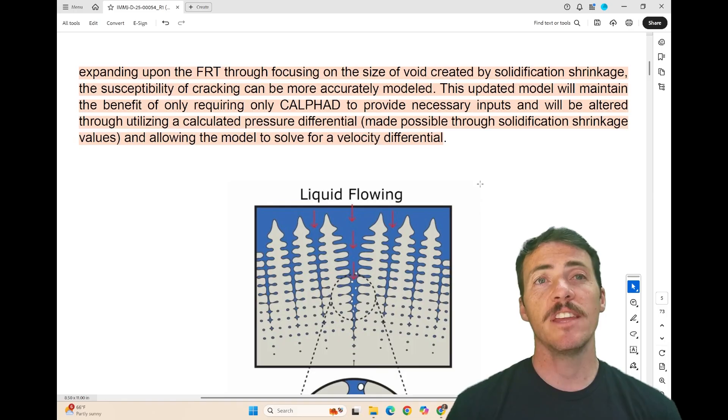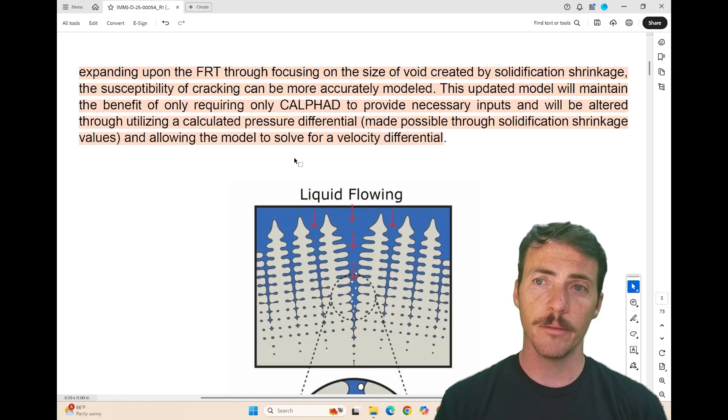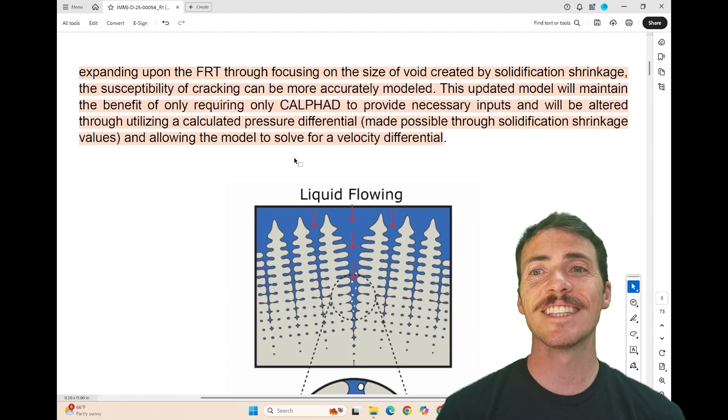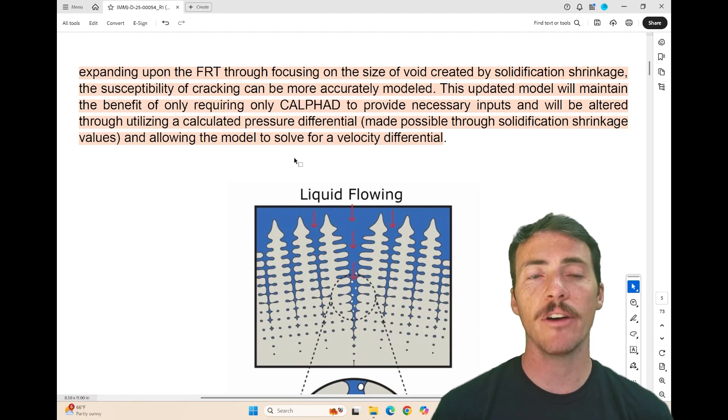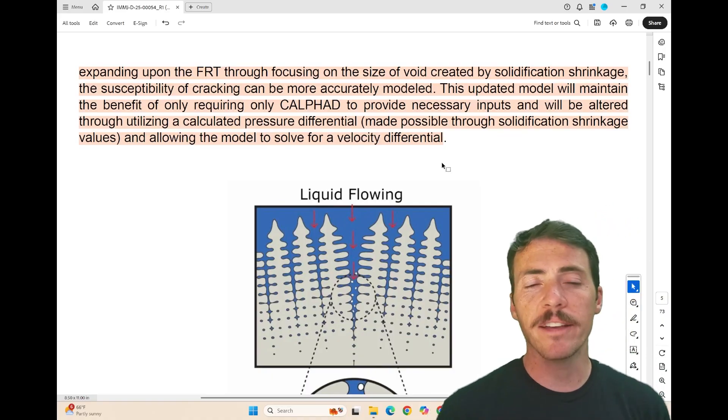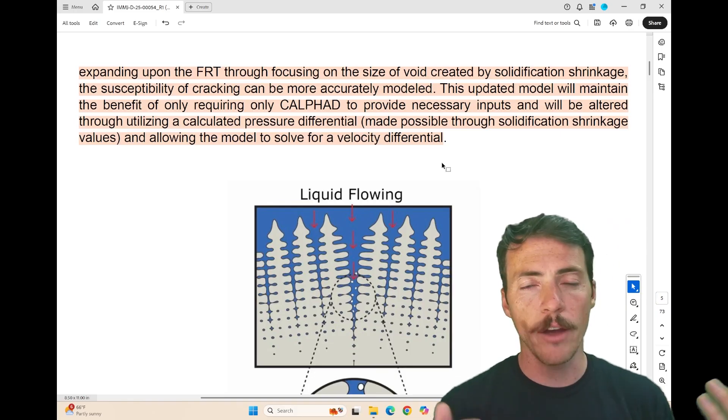So what's different in this work? In this updated model, they're going to maintain the benefit of only needing CALPHAD to calculate these as inputs, but it's going to be altered by utilizing a calculated phase differential made possible through the solidification shrinkage values and allowing the model to solve for the velocity differential. In other words, they're really asking, can we do better by directly modeling how fast the liquid flows instead of just the pressure drop, and by including alloy shrinkage as a driving force for this?